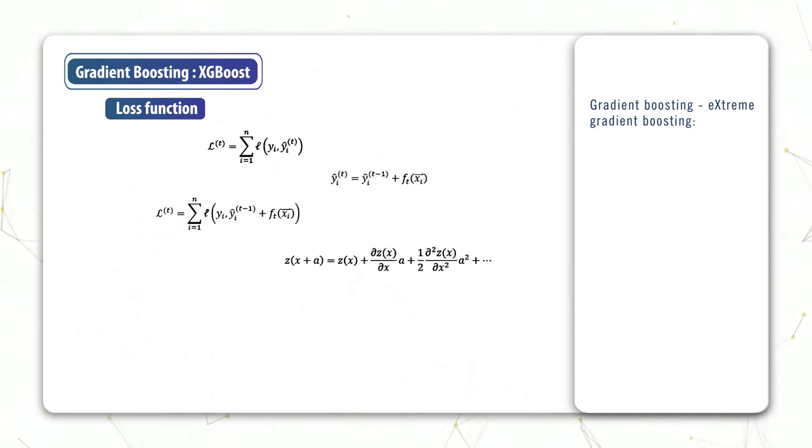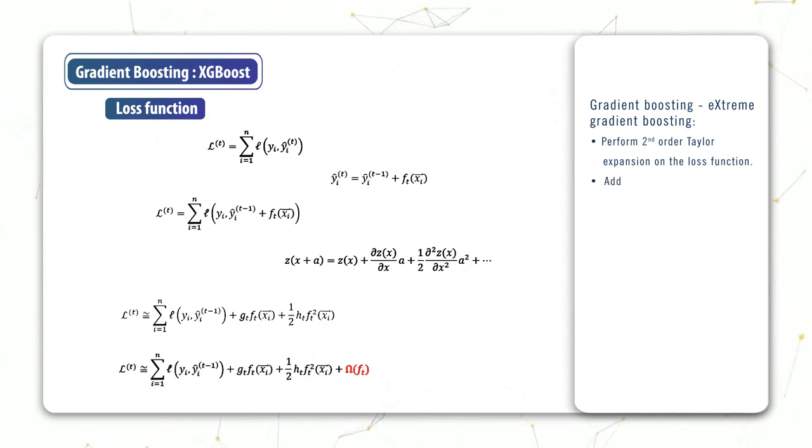Now at this point, you might recall the expression for a Taylor expansion. So now we can actually perform a second order Taylor expansion on this loss function to give this form instead. g and h here are the first and second derivatives of the loss function, also known as the gradient and hessian.